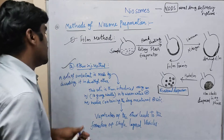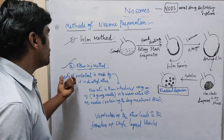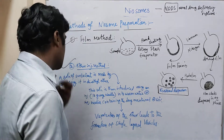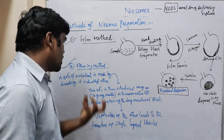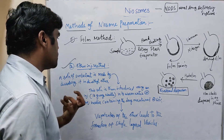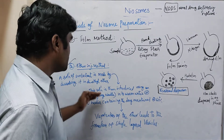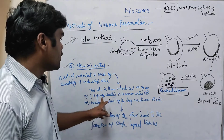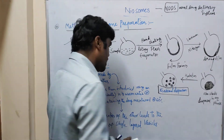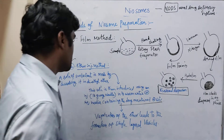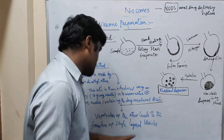The next method is the ether injection method. A solution of surfactant is made by dissolving it in diethyl ether. This solution is then introduced using an injection 14-gauge needle into warm water or aqueous media containing the drug, maintained at 60 degrees Celsius.